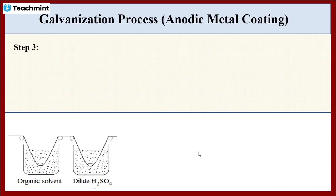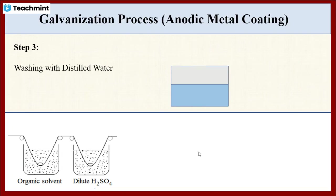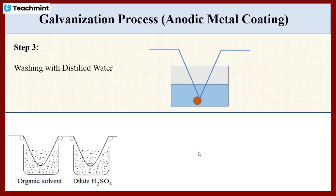In the third step, the metal steel is washed with distilled water. When we wash the metal steel with distilled water, it removes the trace of sulfuric acid remaining from the previous step.